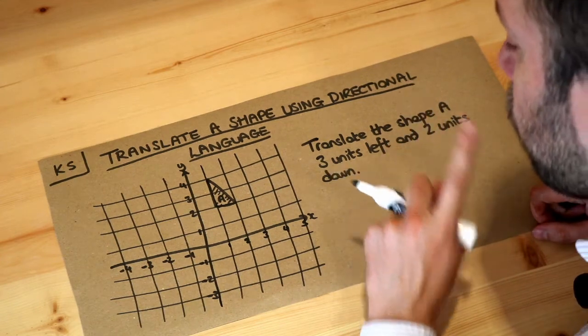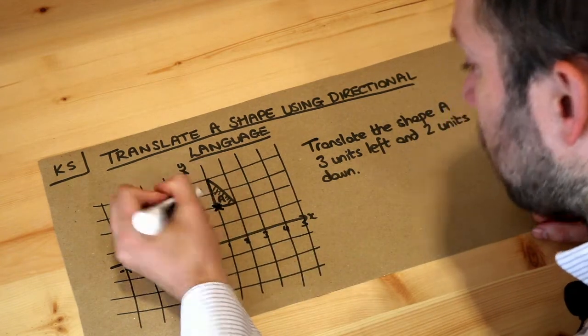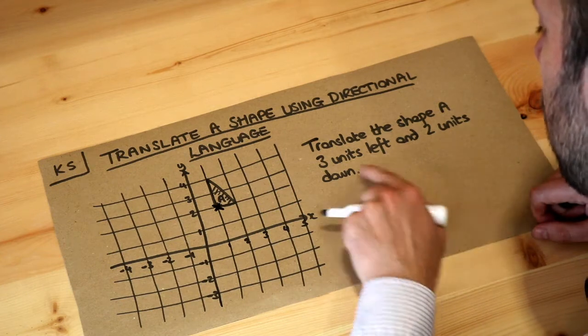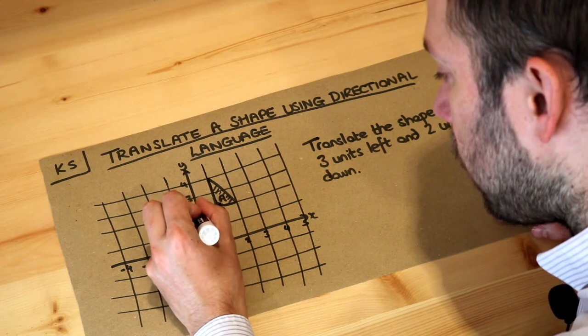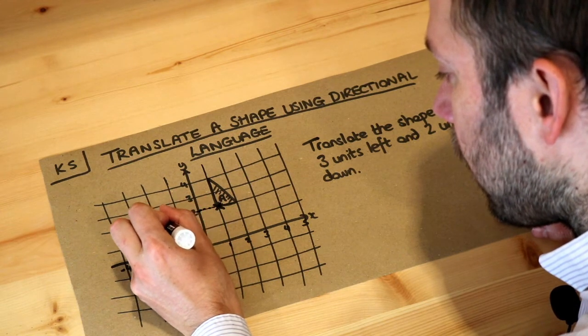Now the key here is to just use one point initially. So if we take this bottom left corner, we want to go three units left—three squares left. So let's do that: one, two, three. So we're now here on the grid.